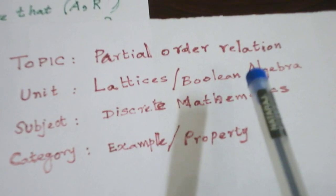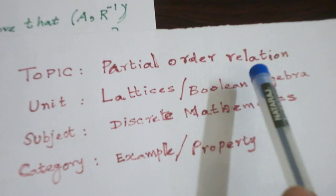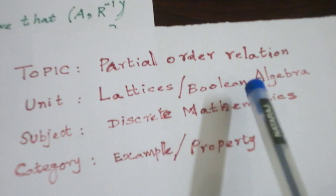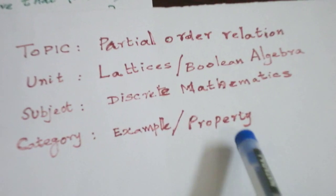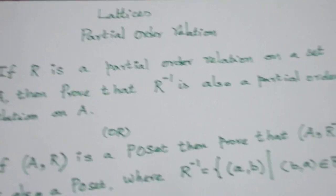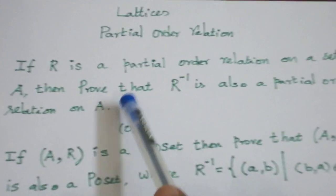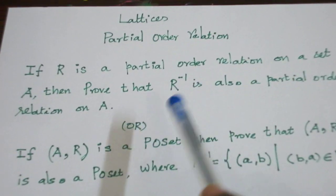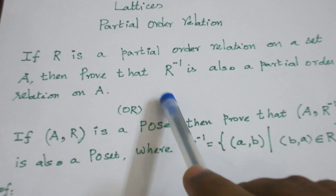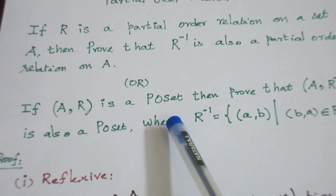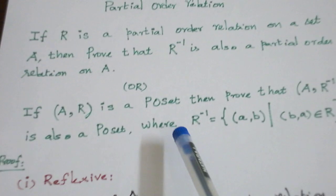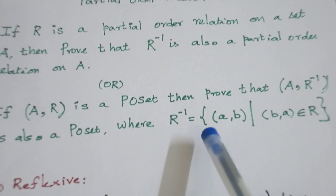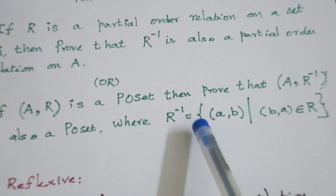Hello students, today let us see a topic: partial order relation, in the unit lattices boolean algebra in the subject discrete mathematics. We are going to see a property from this topic. The property is: suppose R is a partial order relation on a set A, then R inverse is also a partial order relation on the same set. The same question may be given as: if (A, R) is a partially ordered set, then (A, R inverse) is also a partially ordered set.